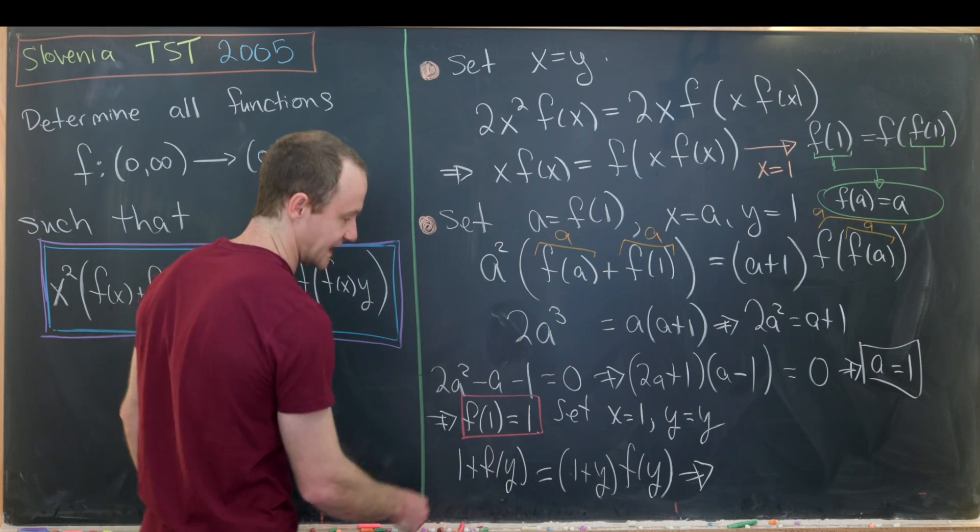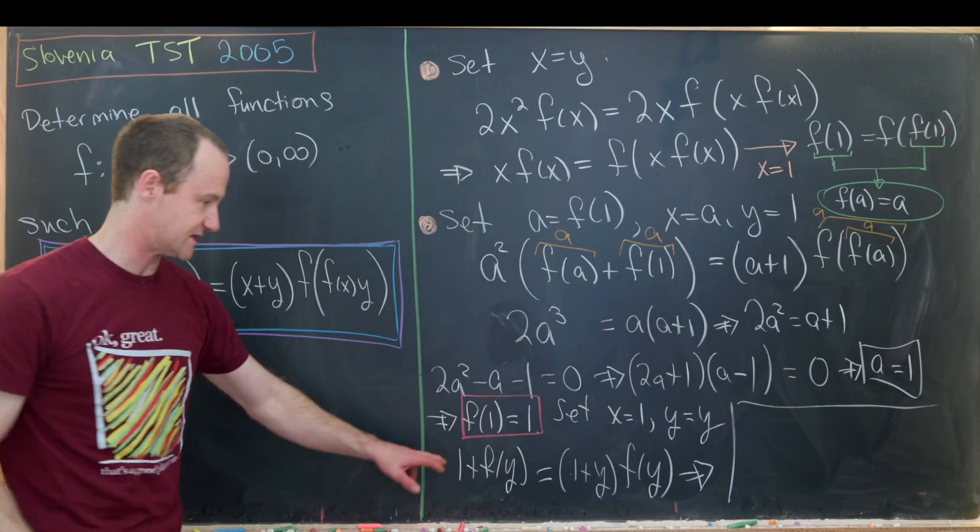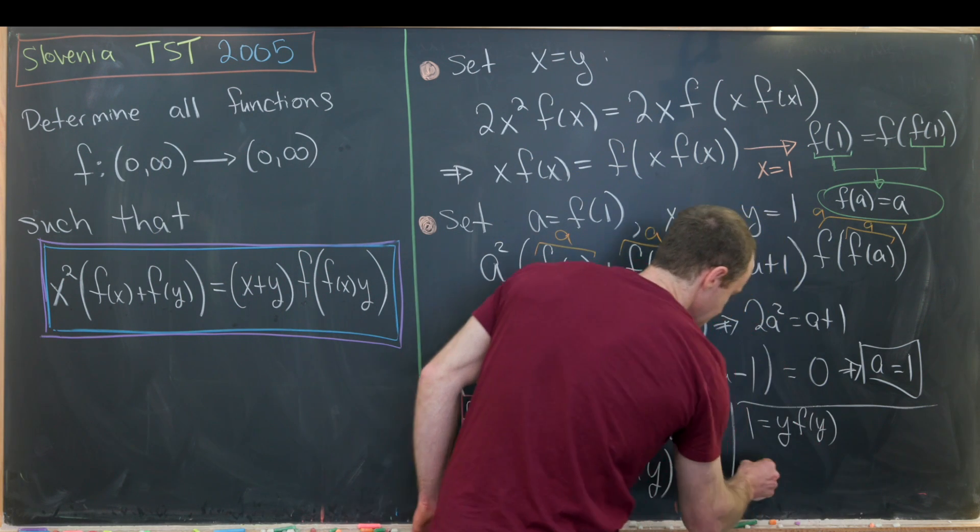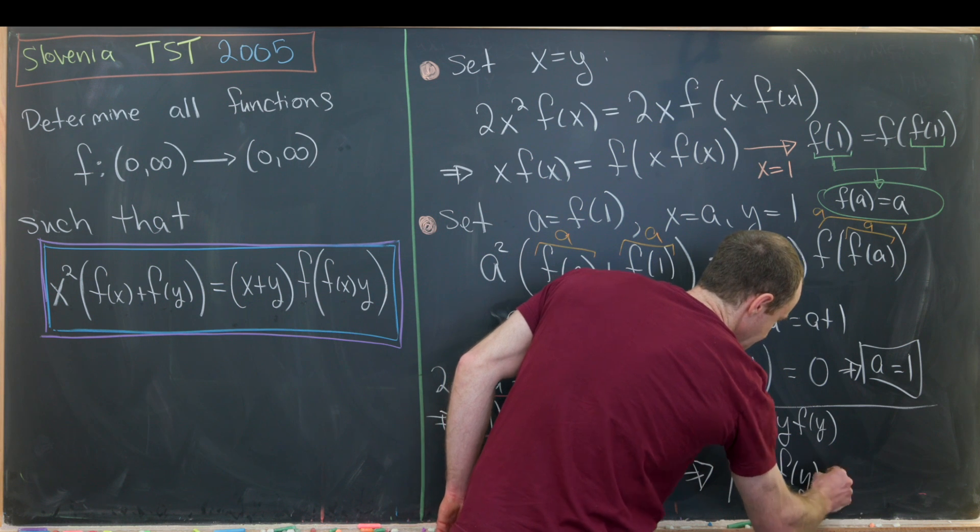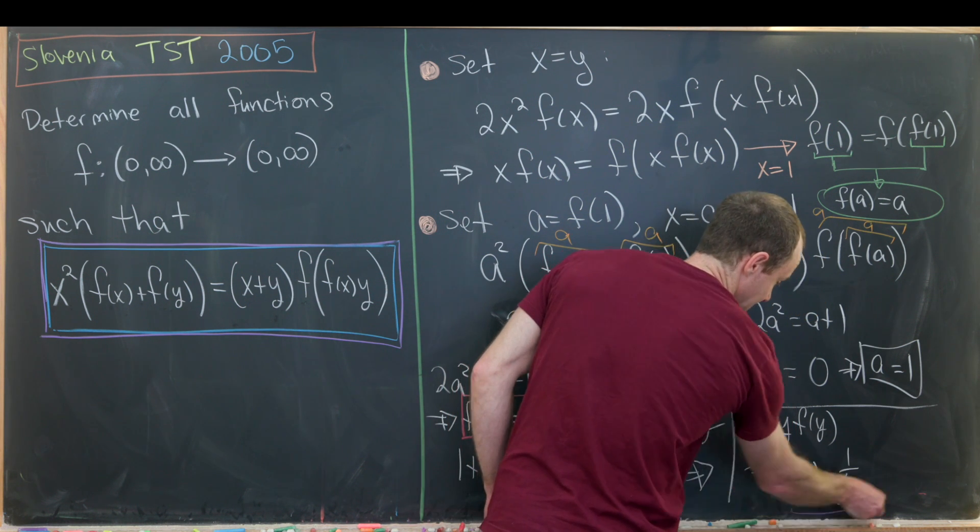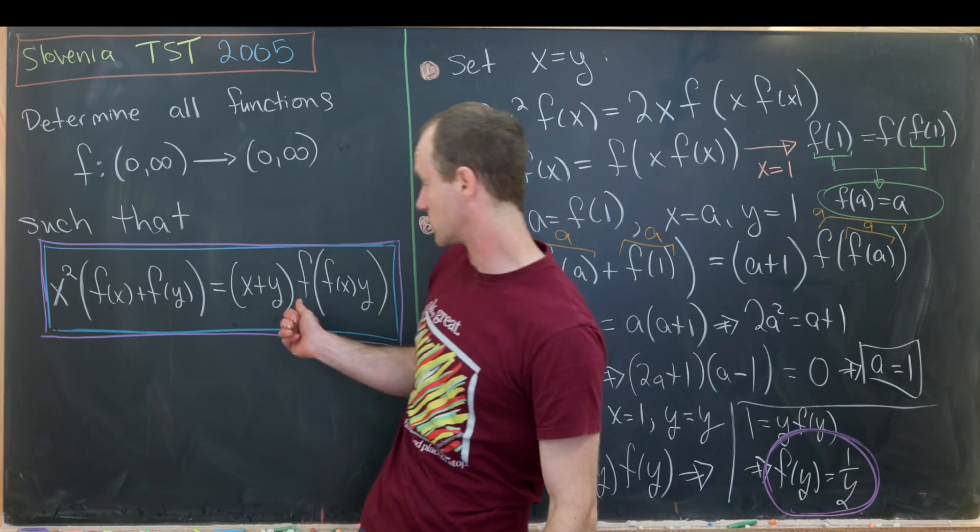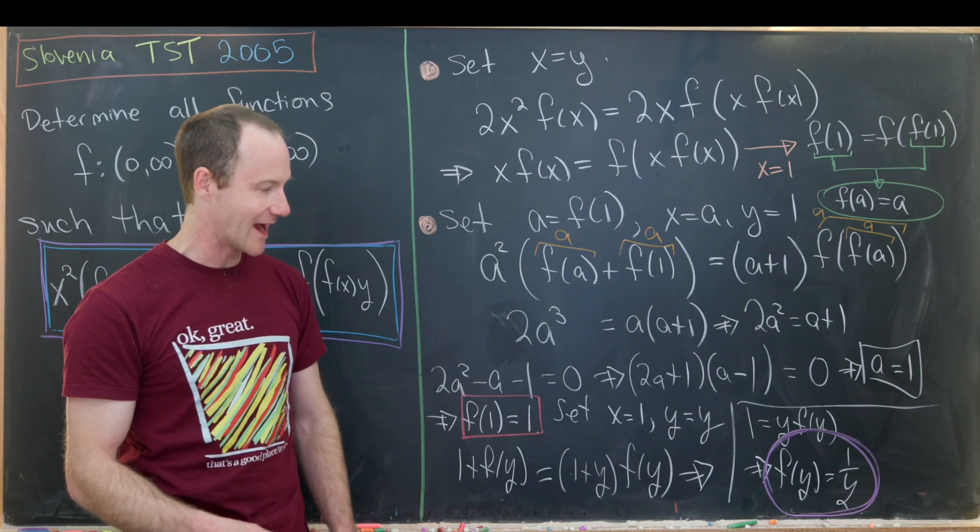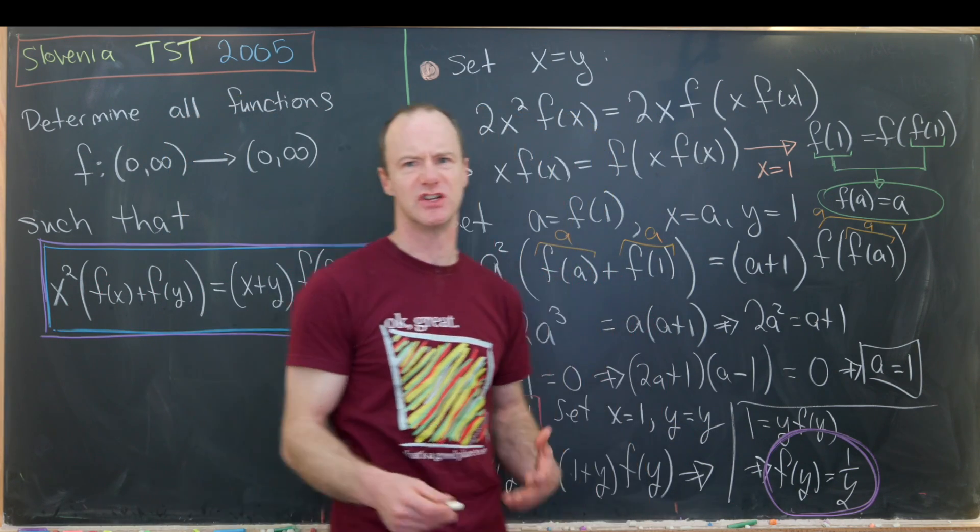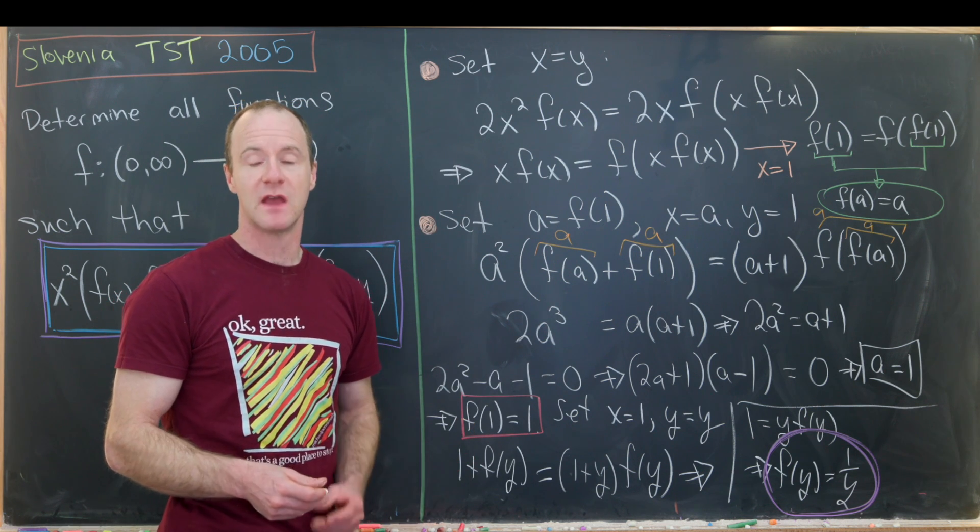So the one times f(y) will cancel with this. And that leaves us with 1 = yf(y), which means that f(y) = 1/y. And that's our function. This is the only function that satisfies this functional equation. So in order to actually finish this off, you'd need to plug this function back into this functional equation and make sure everything works. But I'll let you guys do that. And that's a good place to stop.